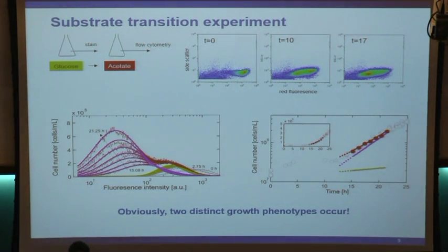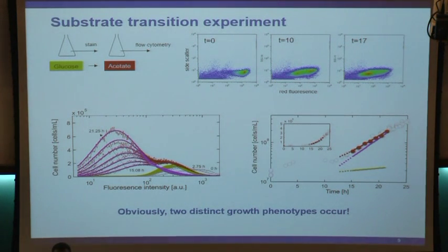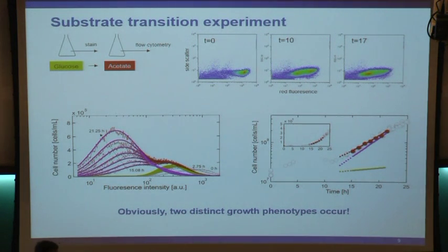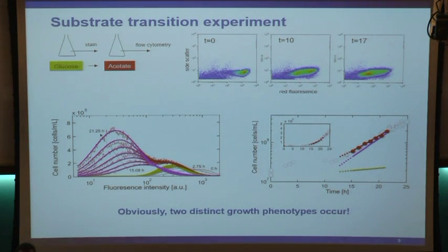Every normally trained microbiologist would ask: could this just be a mutation? Could the cells that grew here have spontaneously acquired a mutation? You would have to show that this is not due to genetic differences but that this is actually a phenotypic difference.